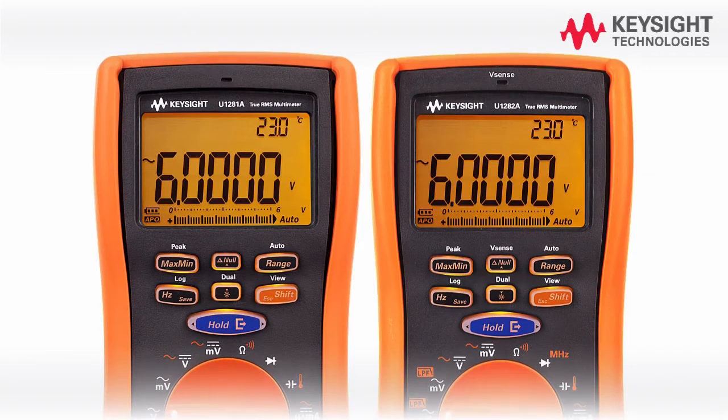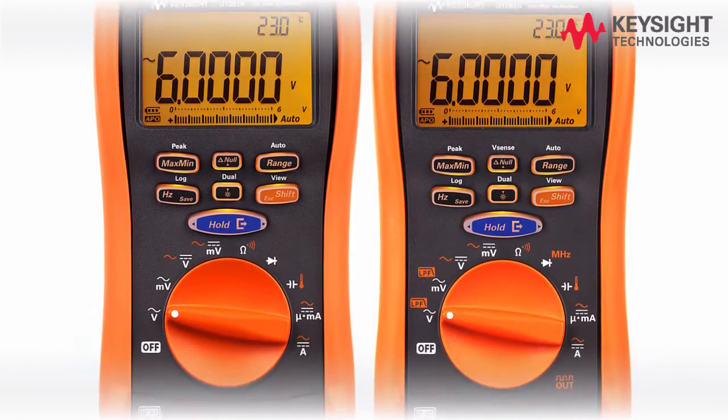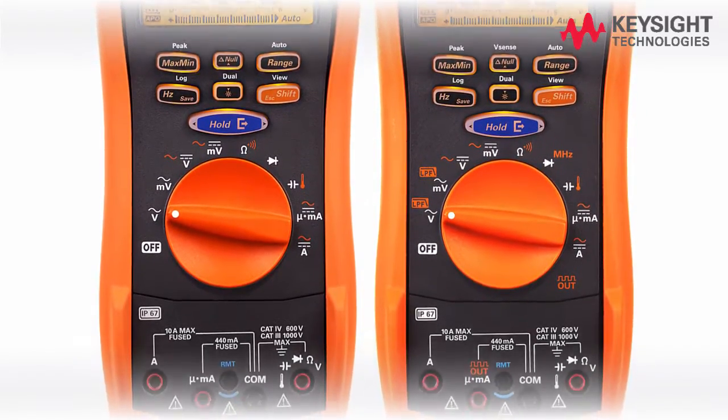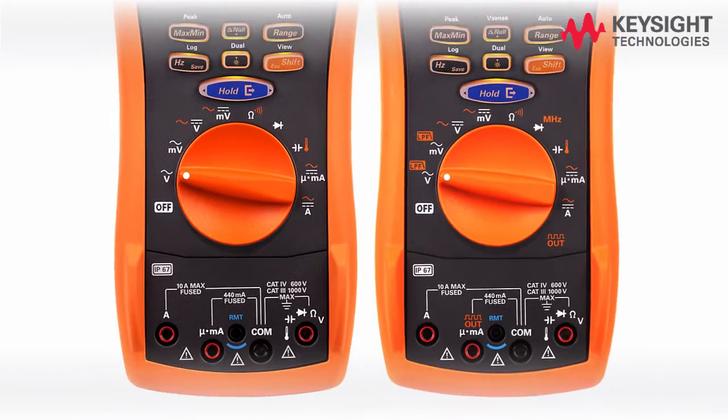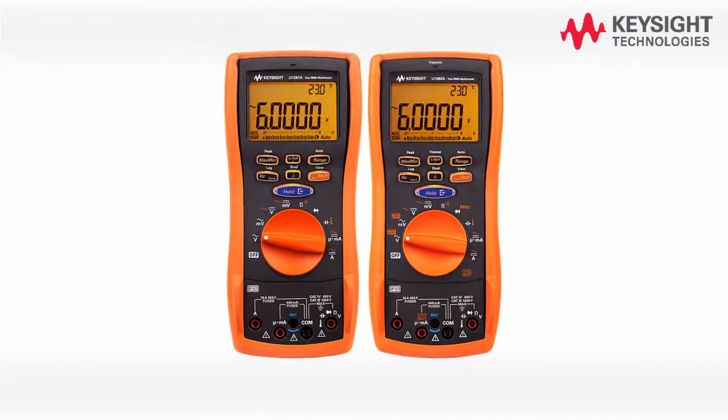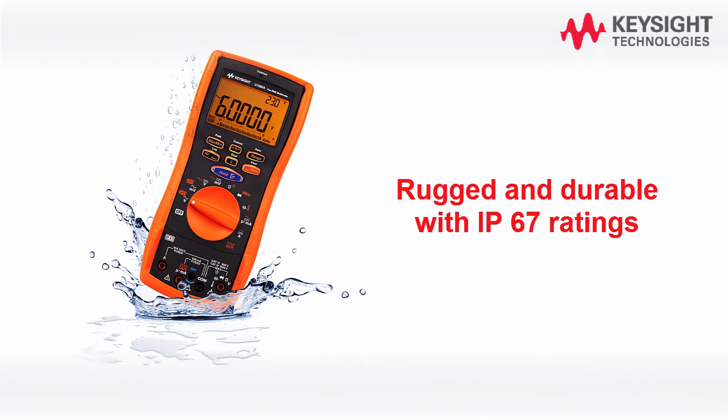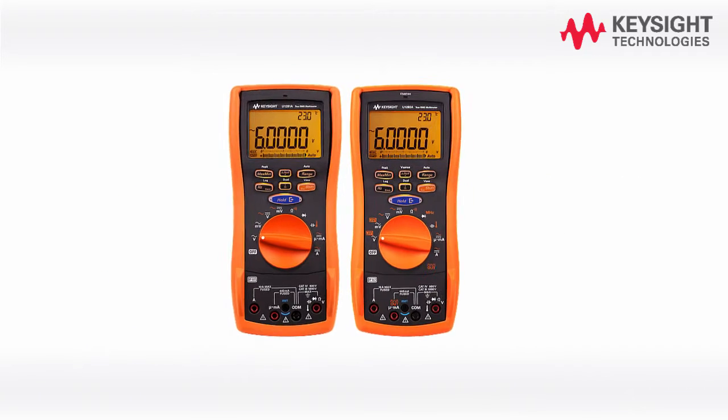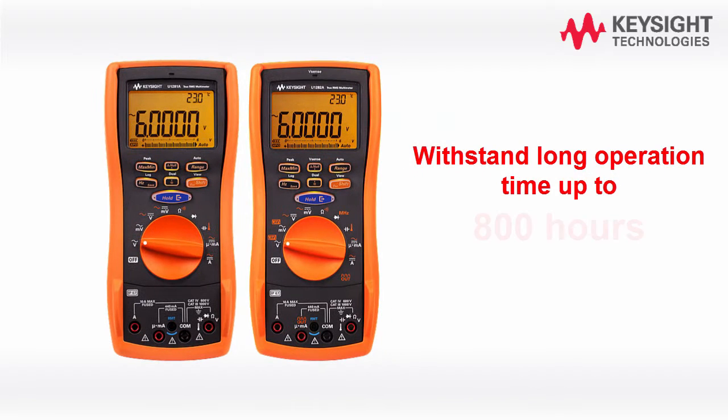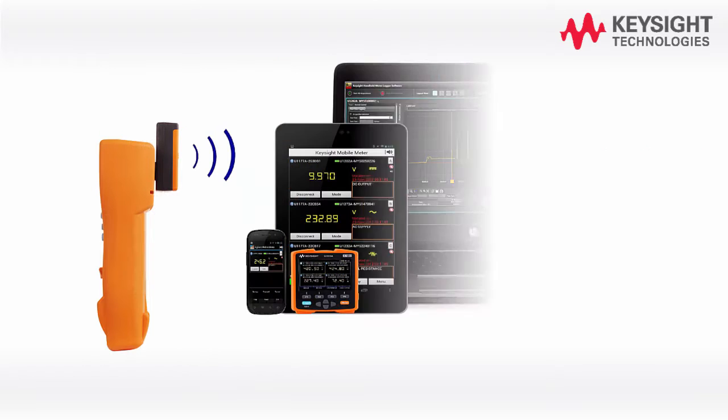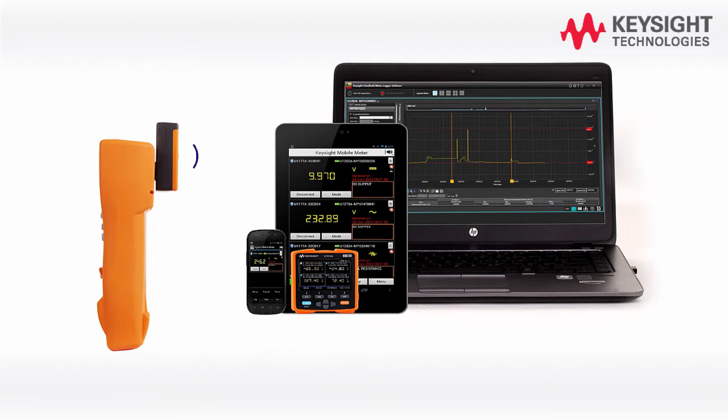Welcome to Keysight U1281A/U1282A Handheld Digital Multimeter Quick Start Video. The U1281A/U1282A 4.5 digit Handheld Digital Multimeter is rugged and durable with IP67 ratings, able to withstand long operation time up to 800 hours and allows you to make remote measurements via PC or smart devices.